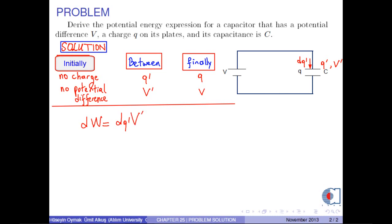We know that Q' can be written as C times V', from which V' can be expressed as Q' over C.